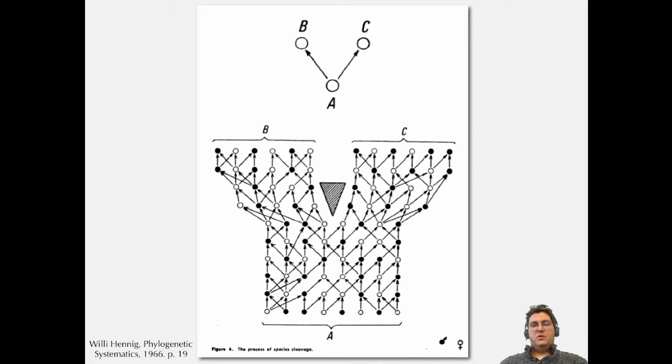For people working in neontology on modern organisms, we don't think about this much. For paleontologists, though, it matters. But typically we just represent this as A becoming B and C at that time point when the triangle appears.